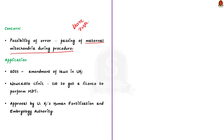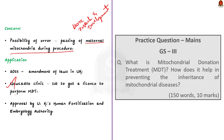The UK government amended laws to allow the MDT procedure in 2015, and Newcastle Clinic became the first center to get a license to perform MDT. Approval is given on a case-by-case basis by the UK's Human Fertilization and Embryology Authority (HFEA). In prelims, there was a question regarding this mitochondrial donation treatment — if you have time, look into that question as well.